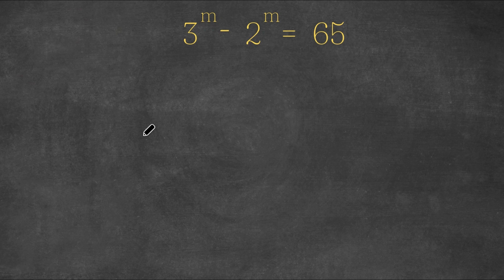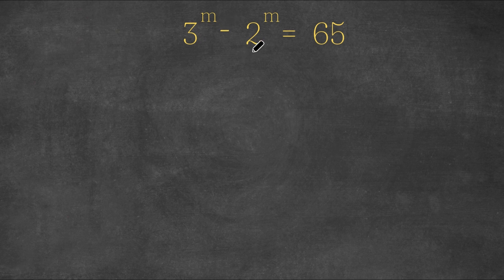Hey guys, welcome back to Click Academics. In today's video I'm going to be teaching you how to solve this exponential equation: 3 to the power of m minus 2 to the power of m is equal to 65.